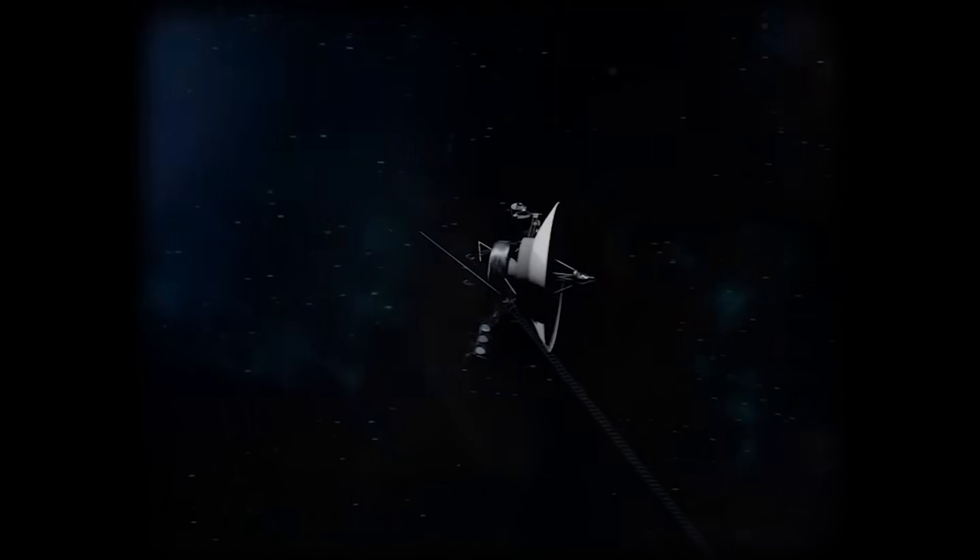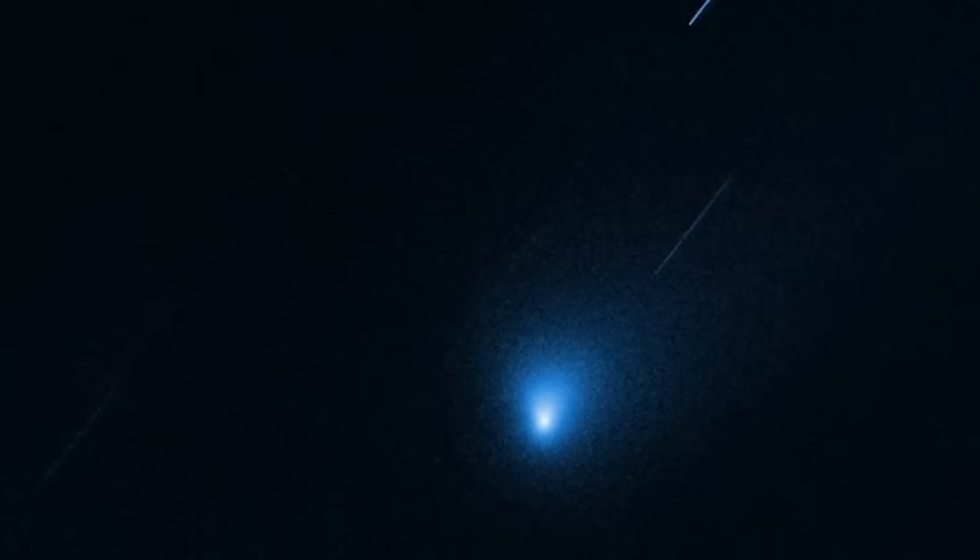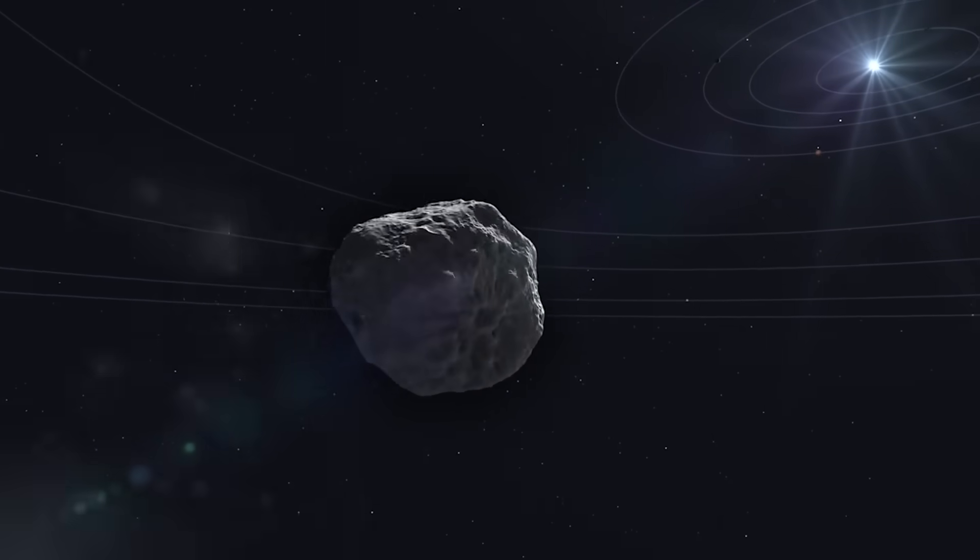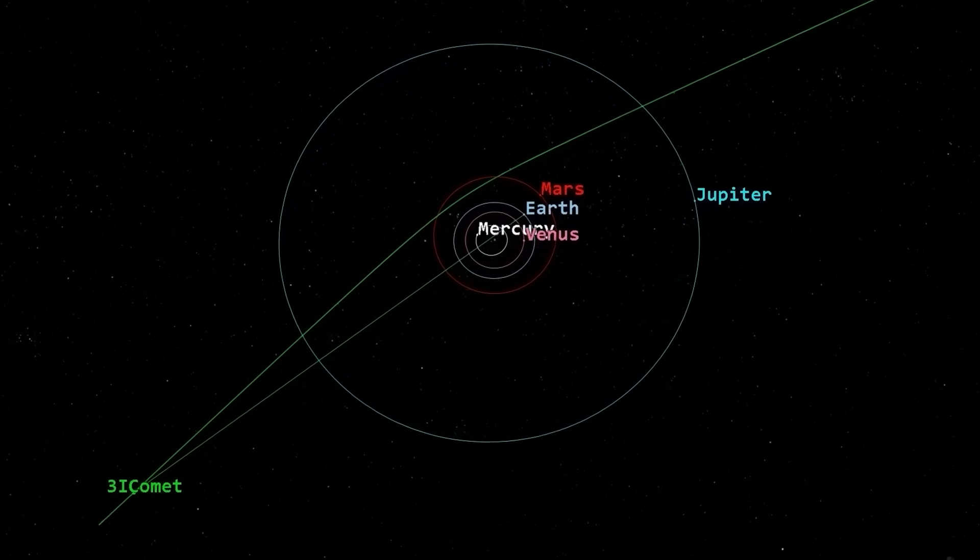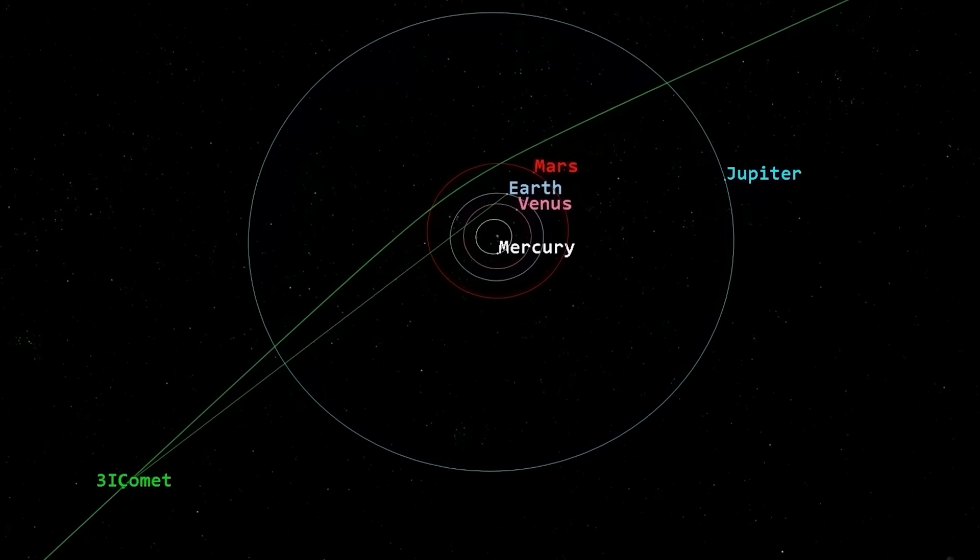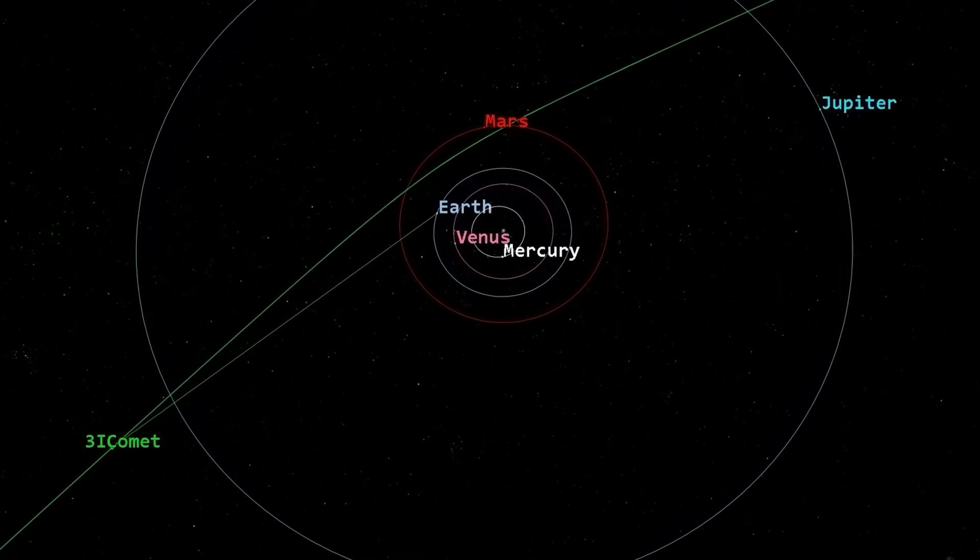To do that, we would need to get up close and personal. We would need to send a probe to intercept it. And that is a monumental challenge. These interstellar objects are moving at incredible speeds, and they are only in our solar system for a brief period of time. It's like trying to catch a bullet with a butterfly net, but the possibility, however remote, is too tantalizing to ignore.